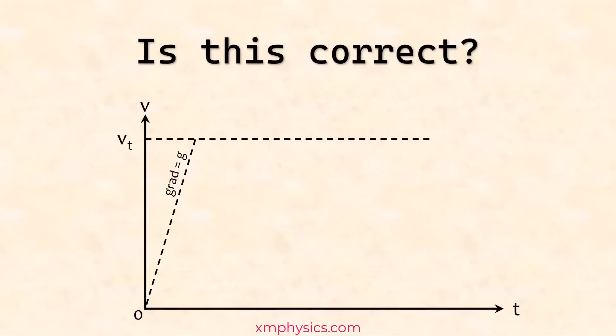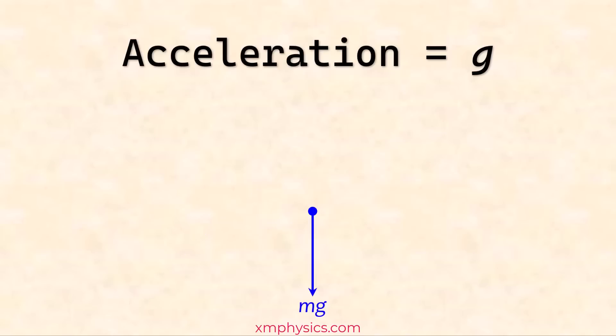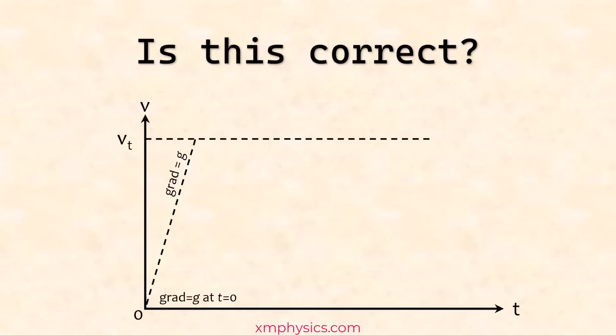So does this mean that this is the correct graph? So we have a curve and then it hits the terminal velocity. Now, this is still wrong. It's still wrong. For example, there's something very wrong here at the origin, at t equals zero. So at t equals zero, the basketball is just dropped. It has no velocity yet. So if it's not moving, there's no air resistance. So at this point, the net force is still mg and therefore the acceleration is exactly equals to 9.81 meter per second square, meaning our graph should start with a gradient of 9.81.